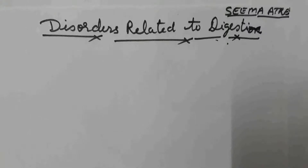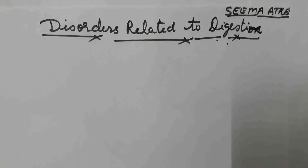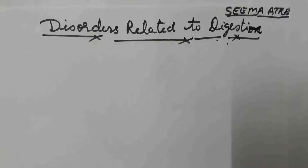When infection takes place in the digestive system — it may be bacterial, viral, or a kind of worm entering along with food and water — it can cause infection in our digestive system and may cause inflammation of the intestinal tract. In this video we are going to discuss disorders like jaundice, vomiting, diarrhea, constipation, indigestion, and PEM — Protein Energy Malnutrition. This is a nutritional deficiency disorder.